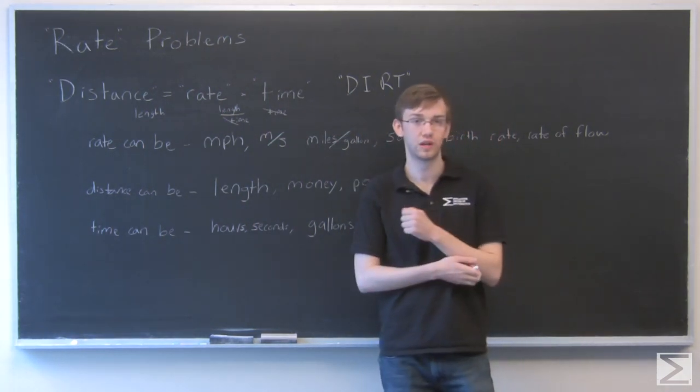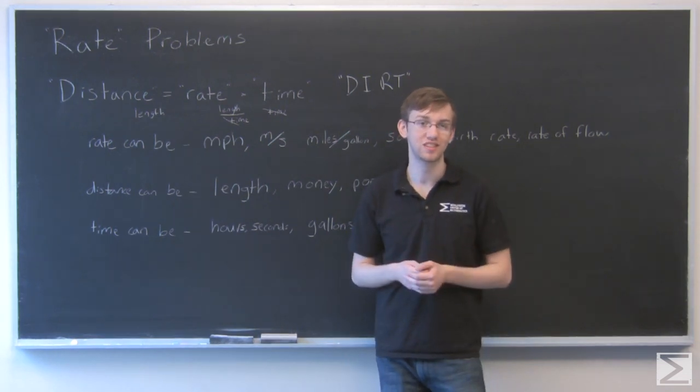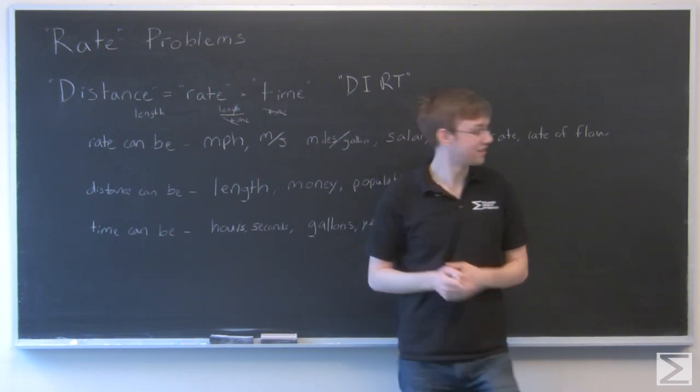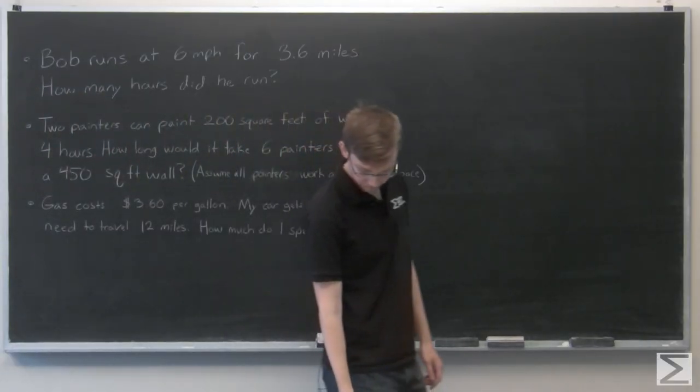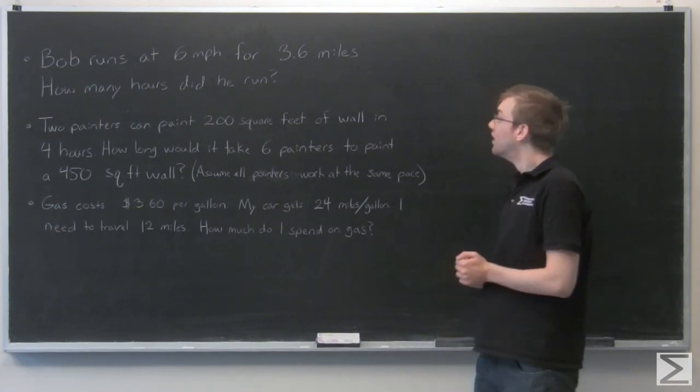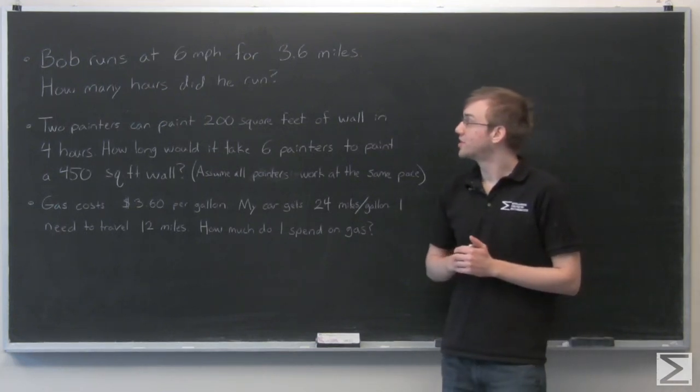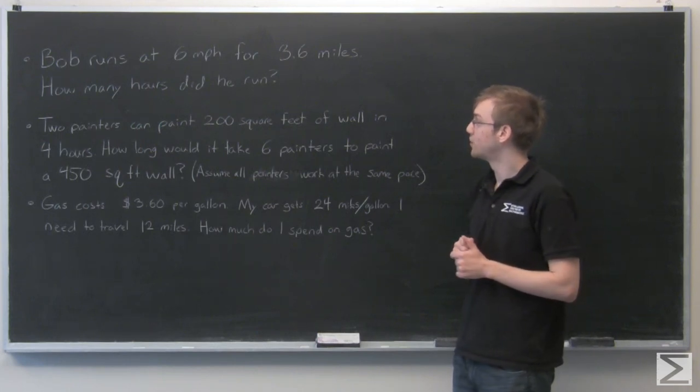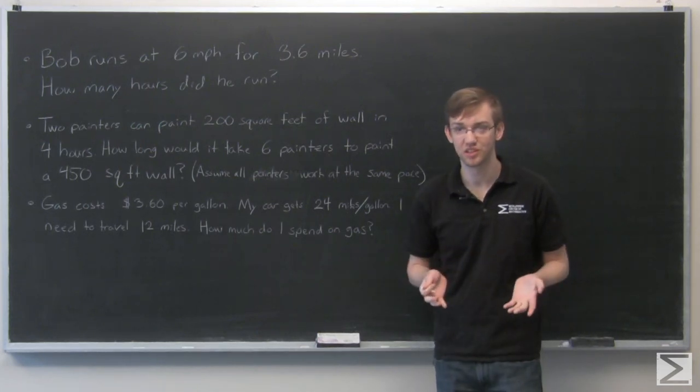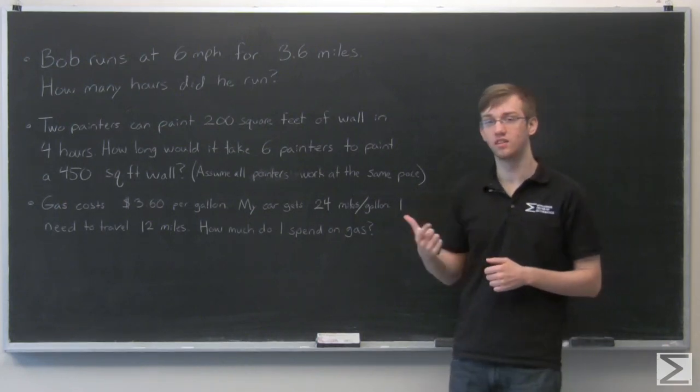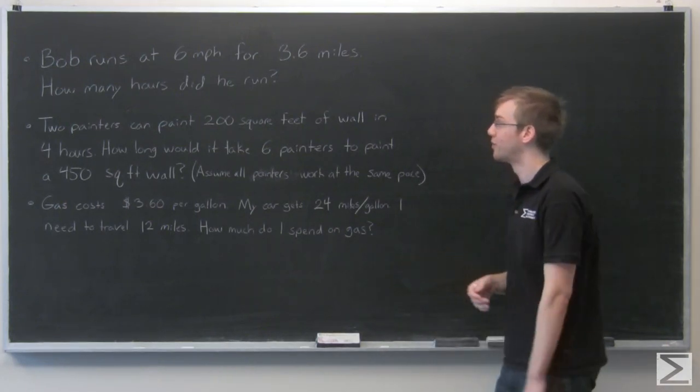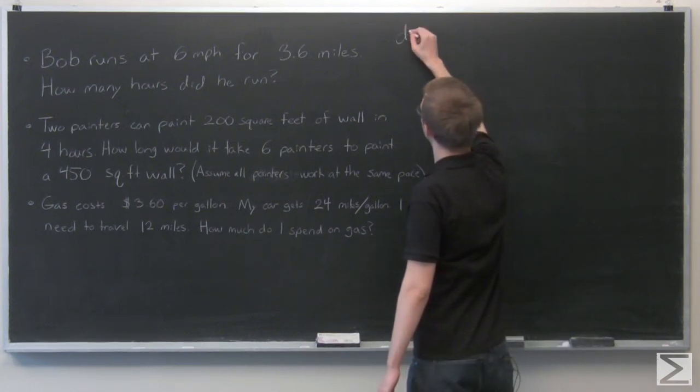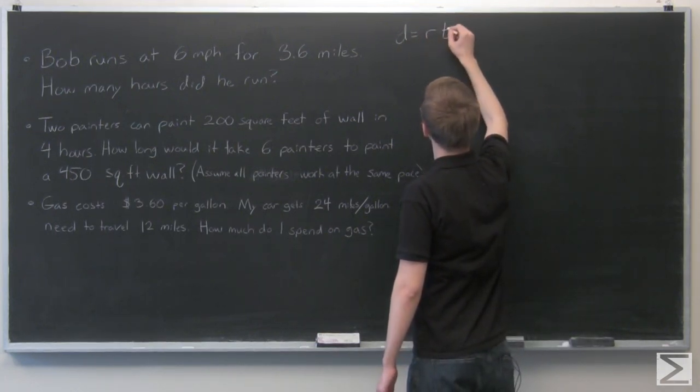Okay, so we're going to do a couple example rate problems, such as you might see on the SAT, to help you get a feel for working with rates. So the first one we see: Bob runs at 6 miles per hour for 3.6 miles. How many hours did he run? This is a pretty basic rate problem. We're dealing with time and length, so we know where to go. We remember distance equals rate times time.